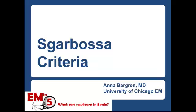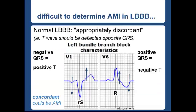Today for EMN5 we're going to review the Sgarbosa Criteria. Let's talk about what you use the Sgarbosa Criteria for. This criteria exists because it's very difficult sometimes to determine if an acute MI is happening in the presence of a left bundle branch block.